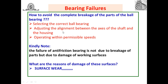The second preventive measure is adjusting the alignment between the axis of the shaft and the housing — proper alignment should exist between the housing, shaft, and bearing. Third, the bearing should be operated within the permissible speed limit. By doing this, we can easily avoid complete breakage of the parts of the rolling contact bearing.